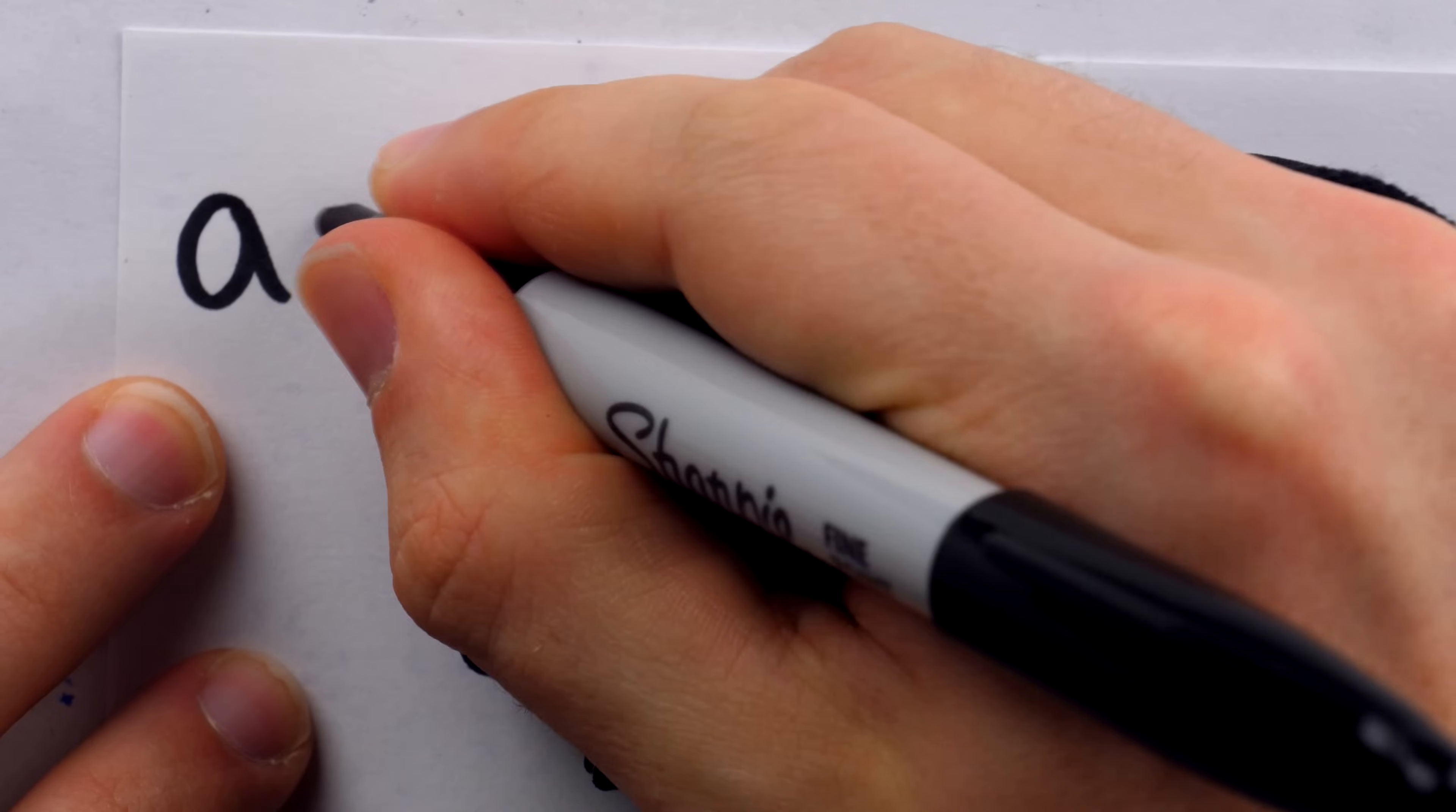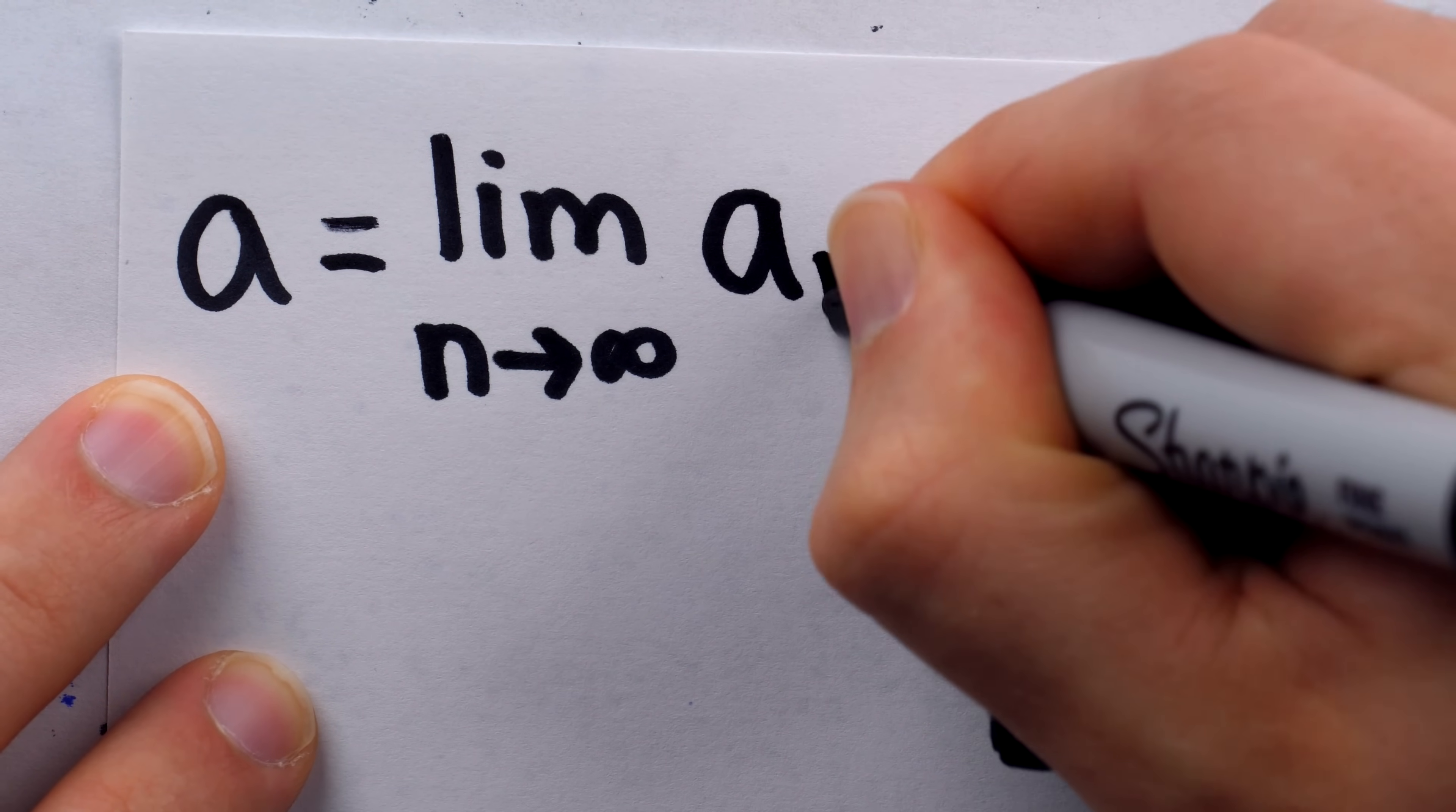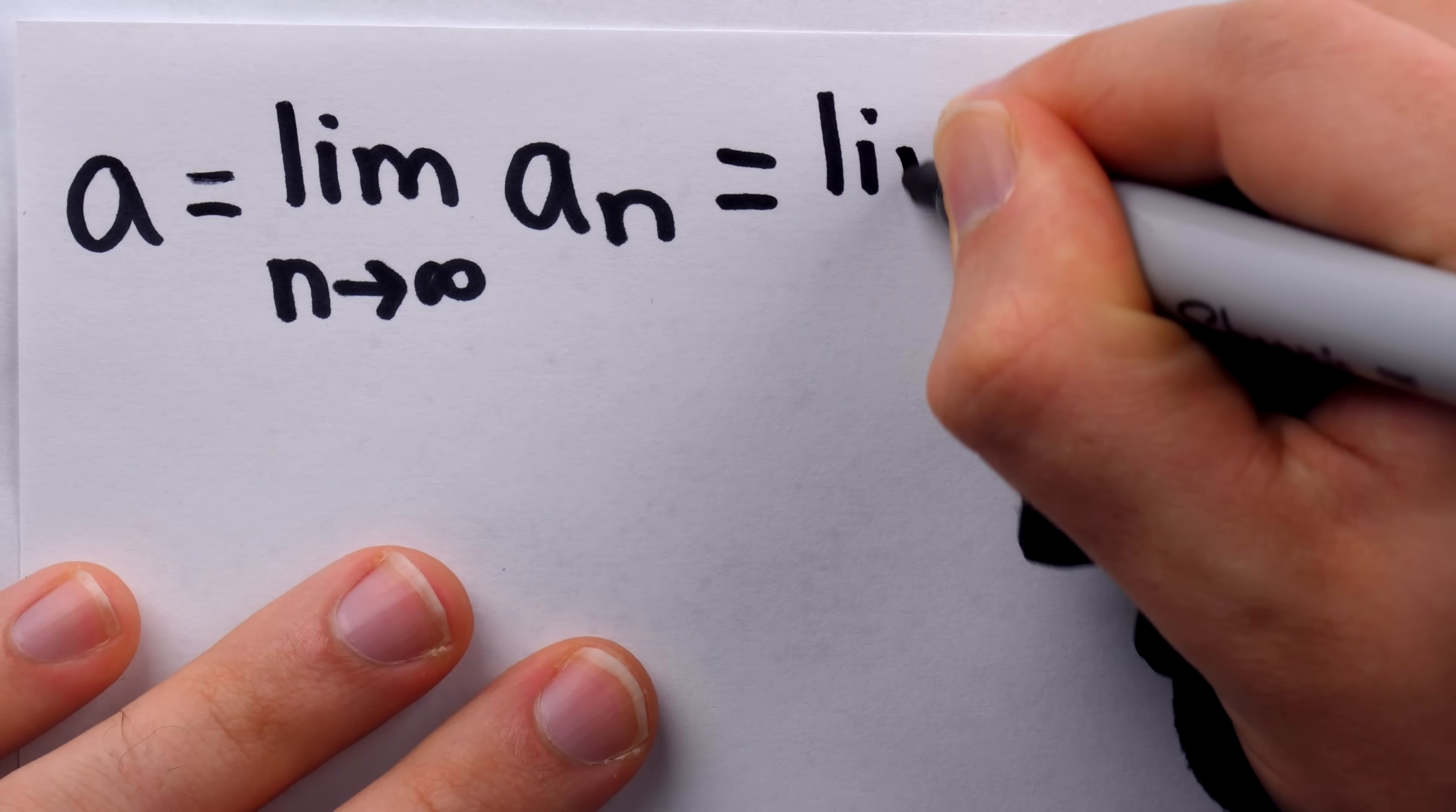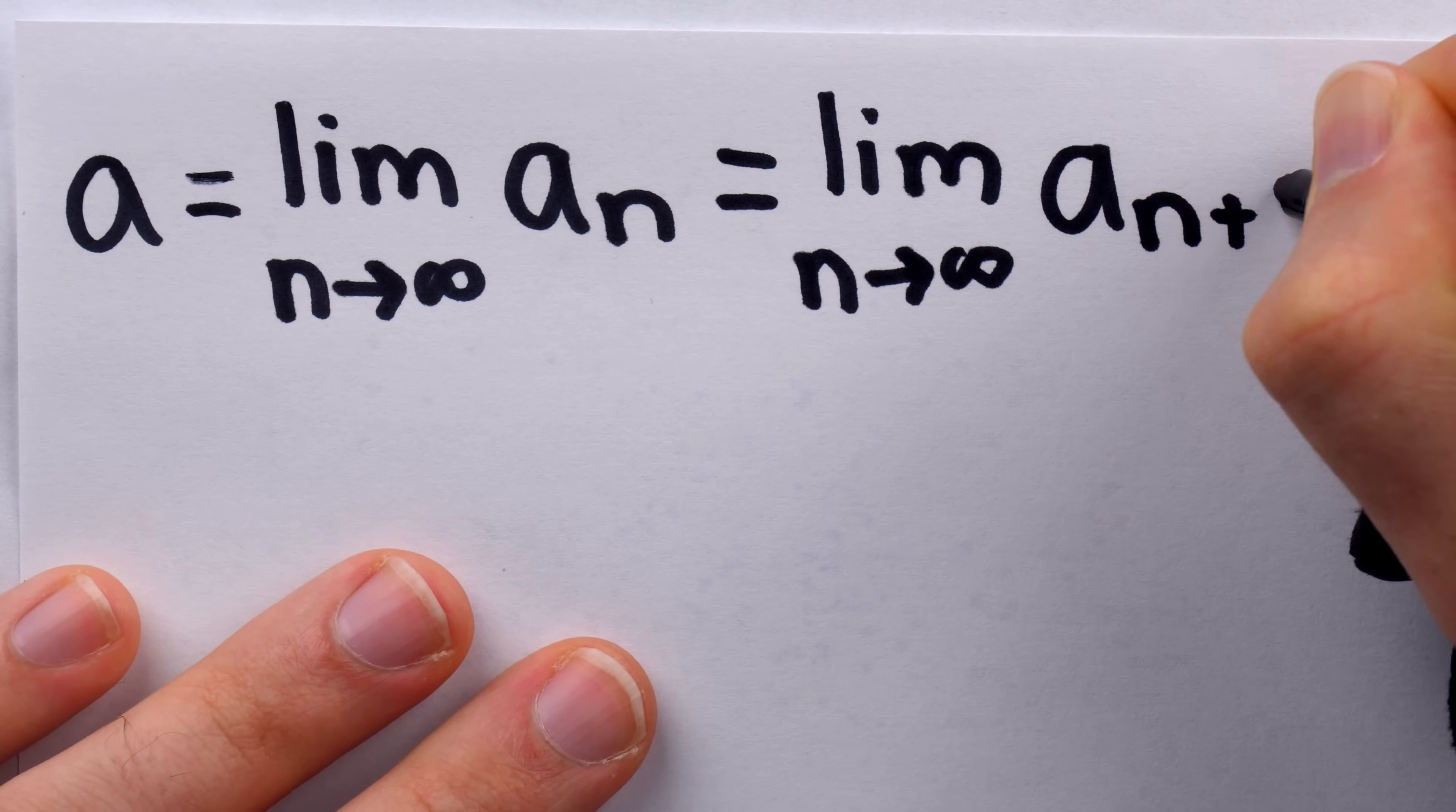So, with the monotone convergence theorem, we now know that the sequence of terms created by applying Herron's method does have a limit. We're going to call that limit a. Of course, it's our objective to show that this limit a is, in fact, the square root of t. For now, we just know that it's the limit of our sequence, which is written like this. It is the limit of a n as n goes to infinity. But remember what I said about long-term behavior. We could skip over the first term, and that, of course, isn't going to change the limit. So, this is the same as the limit as n goes to infinity of a n plus 1.